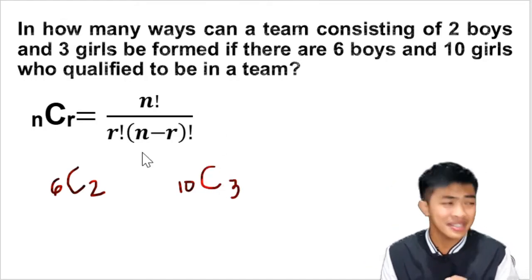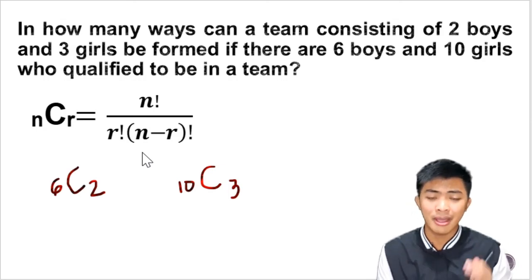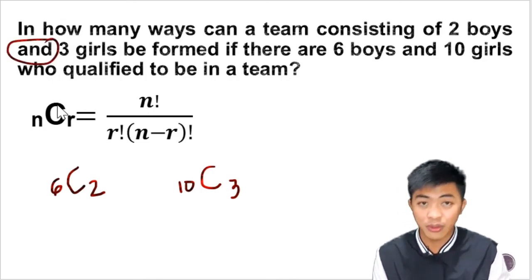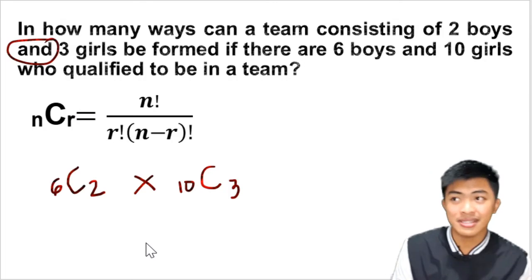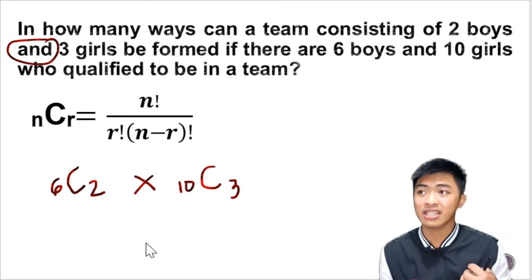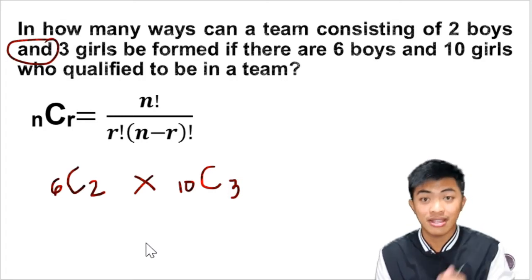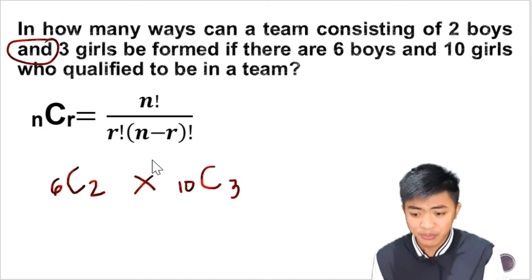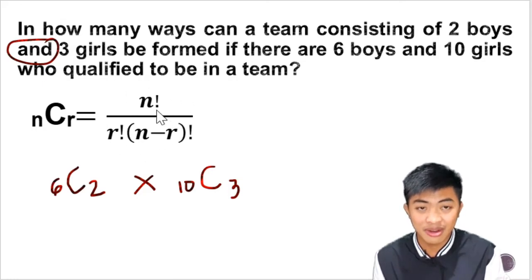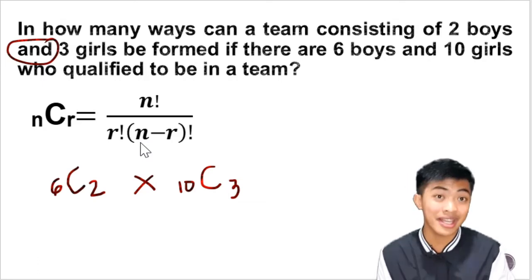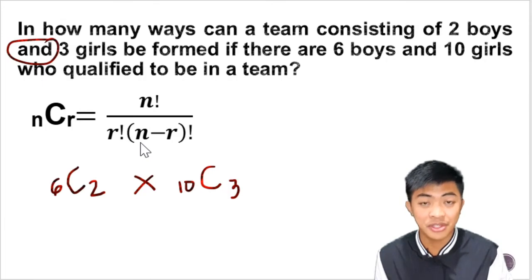I've noticed in problems, when they are using the conjunction AND, always remember, multiplication is involved. So we are going to multiply this. If it's AND you multiply, if it's OR you add. We're going to have a different example for that later on. Other people might substitute this in the formula, but I'm going to use my calculator.